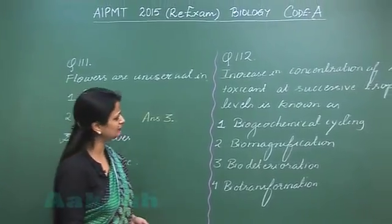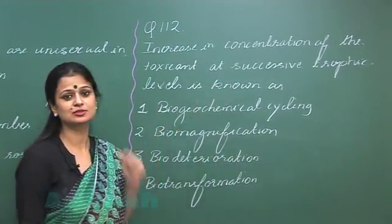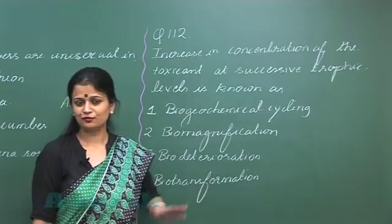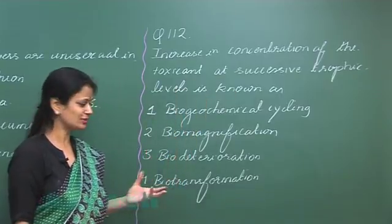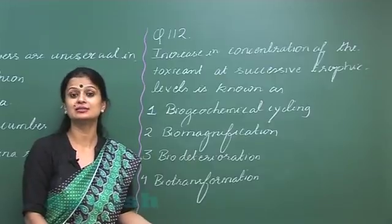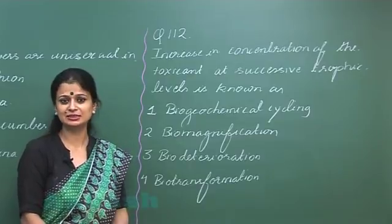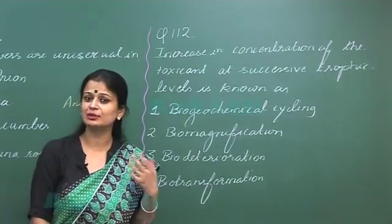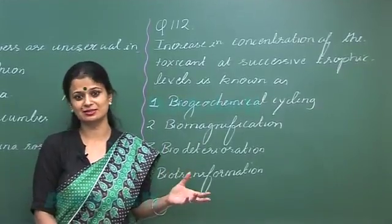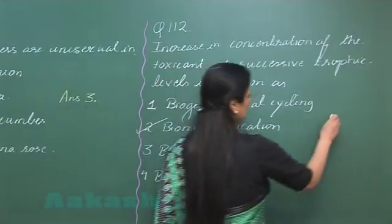Question number 112: increase in concentration of a toxicant at successive trophic levels is known as? The increase in concentration of a toxic substance from lower to higher trophic levels is called biomagnification, also known as bioaccumulation or bioconcentration. A classic example is DDT, which accumulates in fat and is non-biodegradable, so its concentration increases with each trophic level. The right answer is option number two.